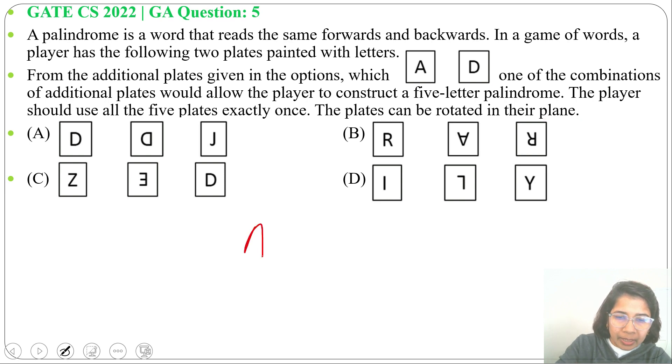We have A and D. Now check option A: D, D, J. After rotation we will get D. Now these three are in palindrome but A not equals to J. So option A is wrong. It's not a palindrome.